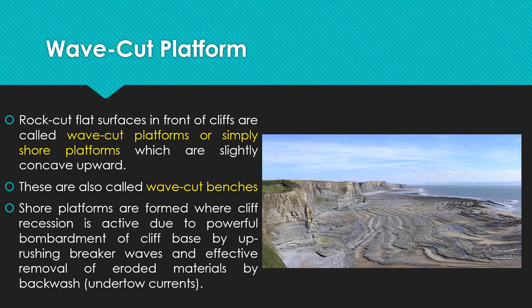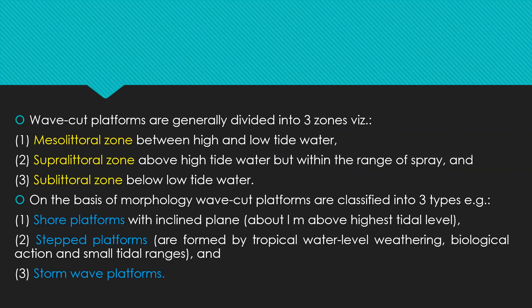The wave cut platform is divided into three zones: the mesolittoral zone, the supralittoral zone, and the sublittoral zone. The mesolittoral zone is between the high and low tidal water levels. The wave cut platform is thus divided into these three zones based on tidal position.